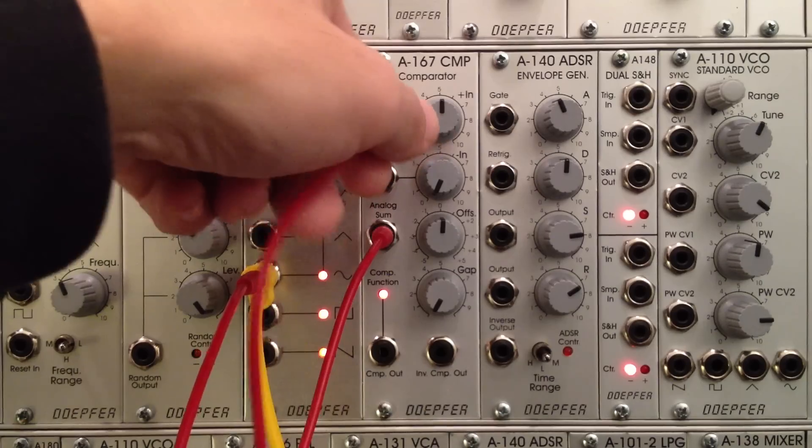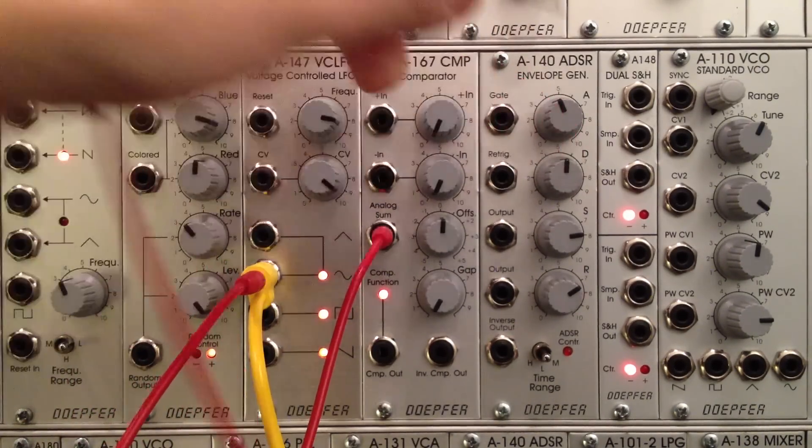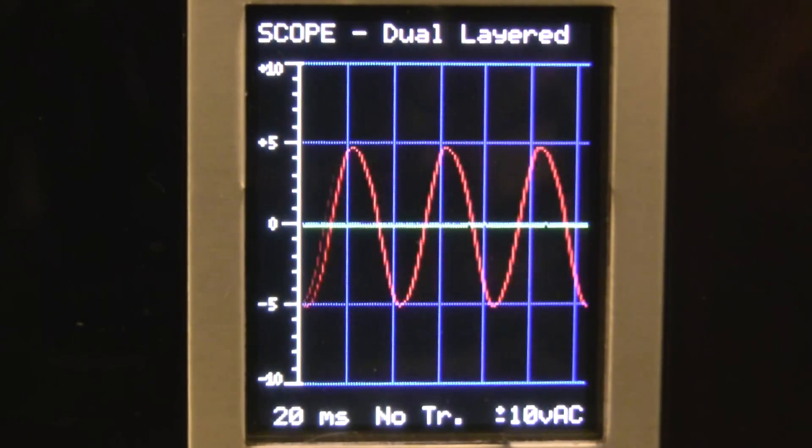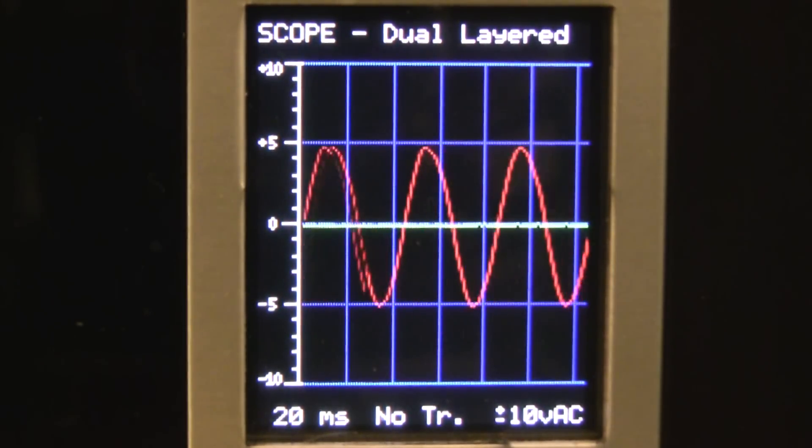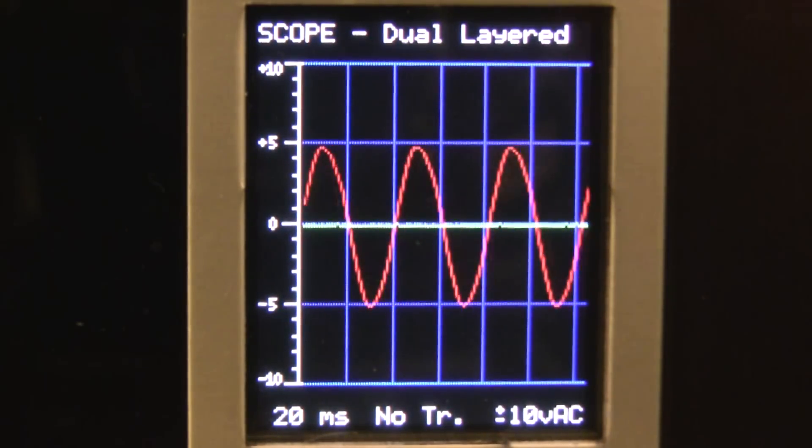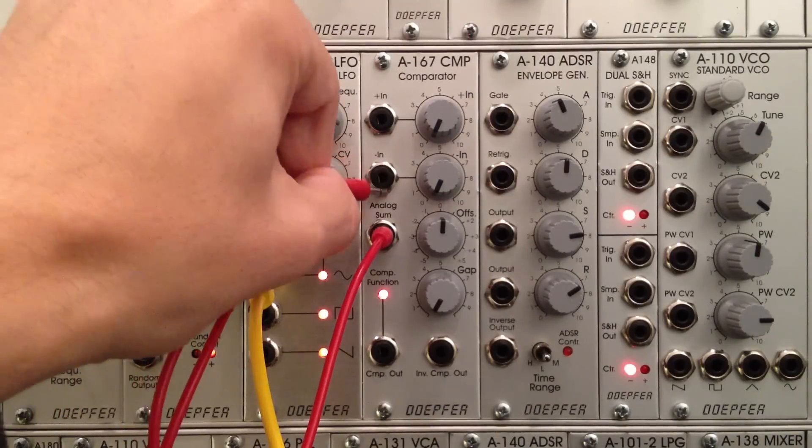I'm going to bring that level all the way down. If we look at our oscilloscope now we have just the normal sine wave going all the way across, and then the second line is sort of just straight all the way across. And on our A167 now we're going to go into the minus in or negative input.